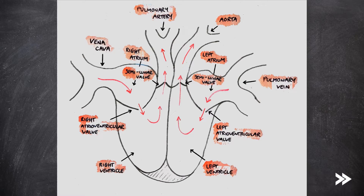Always be very specific with your labelling in exams. Don't just say atrioventricular valve — say it's the right atrioventricular valve. Don't just say ventricle — state whether it's the right or left ventricle. Mark schemes can be lenient or harsh, so to be safe, always state which side of the heart you are referring to.